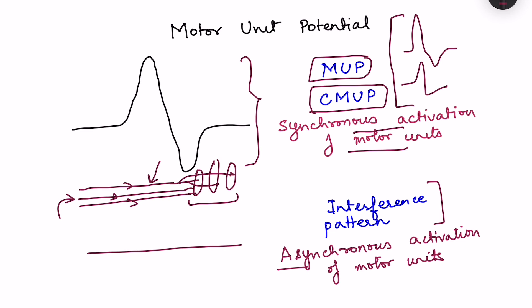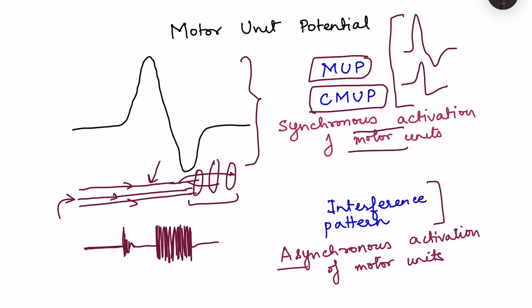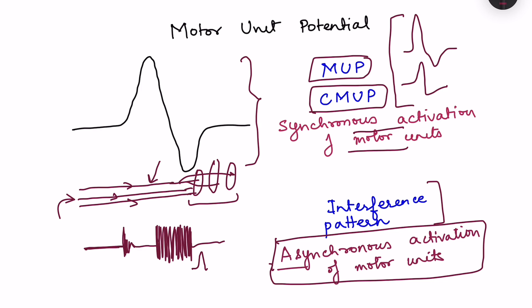Initially we will not get any change in potential. When we have inserted the needle, due to needle insertion there will be some activity, then no electrical activity. When we ask the person to voluntarily contract the muscle, we get an irregular pattern because of asynchronous activation of motor units — they are not activated at the same time. One motor unit may fire at one moment, another at a different moment, so when added up the action potentials are not occurring together, producing what is known as an interference pattern.